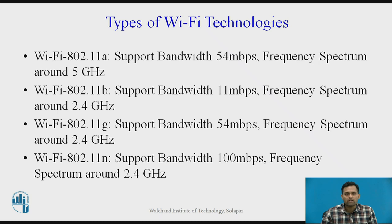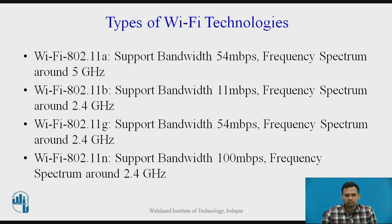Now we will see types of Wi-Fi technologies. First is Wi-Fi 802.11a, which supports a bandwidth of 54 Mbps and a frequency spectrum of around 5 GHz. Second is Wi-Fi 802.11b, which supports 11 Mbps and a frequency spectrum of around 2.4 GHz. Third is 802.11g, which supports 54 Mbps and a frequency spectrum of around 2.4 GHz. These are the types of Wi-Fi technologies in use today.